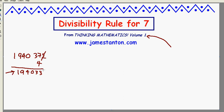The rule says delete the last digit, in this case 3, double it, 6, and subtract from what remains. 19,403 take away 6 is 19,397. And now ask instead, is that a multiple of 7? Can't tell. Delete the last digit, double it, and subtract. 1,925.